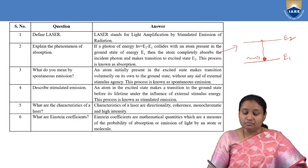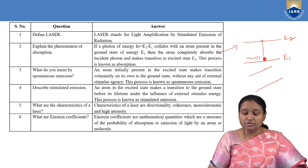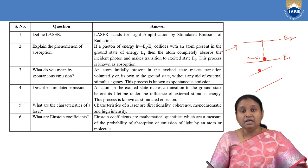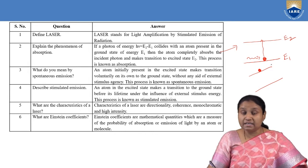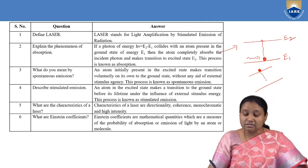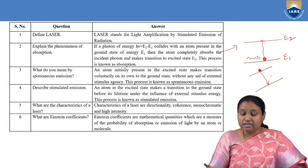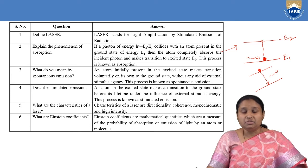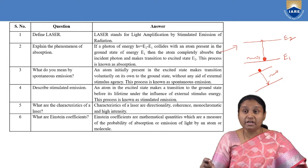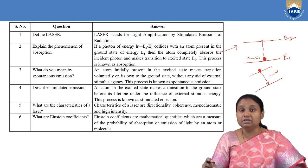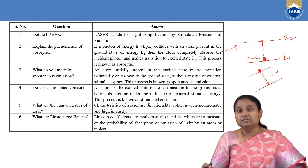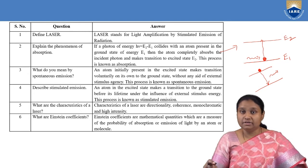Coming to spontaneous emission: after absorption, the atom will be in the excited state. It stays there for its lifetime, after which it de-excites to the ground state and emits a photon. Due to spontaneous emission, the photons emitted are out of phase with each other, giving incoherent, polychromatic, and less intense radiation.